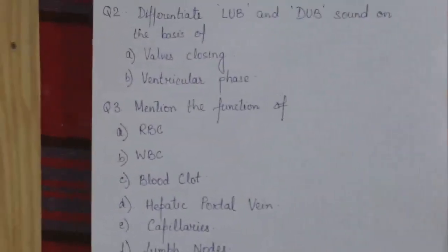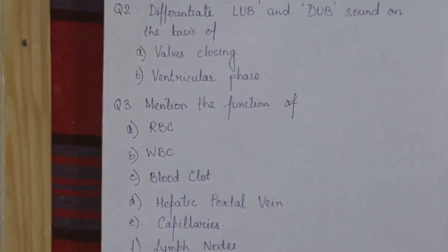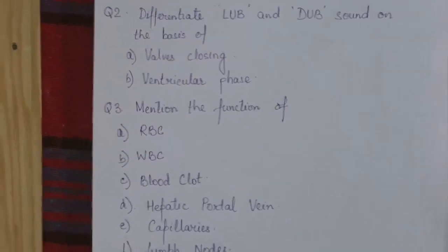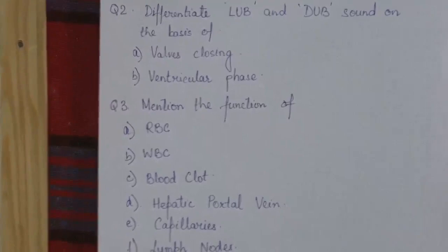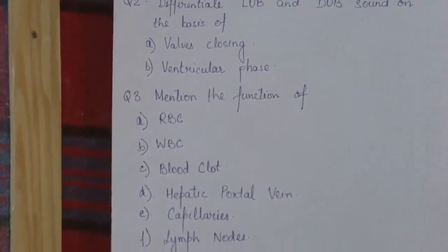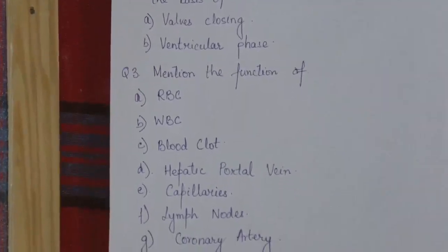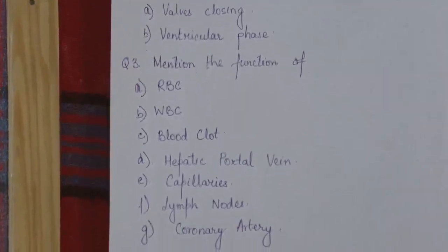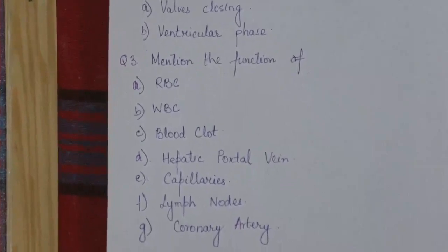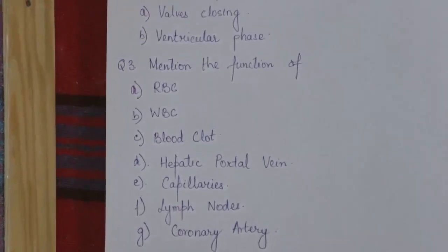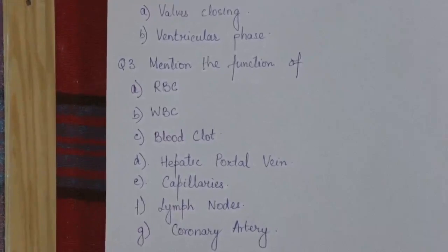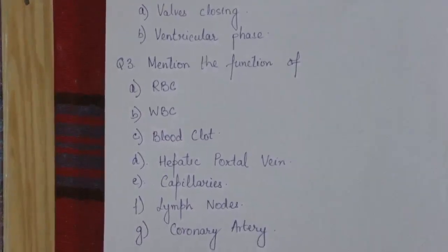Question number three: mention one important function of RBC, the function of WBC, why blood clots are formed, and the function of the hepatic portal vein. As mentioned yesterday, do not write that it regulates the amount of nutrients or detoxifies toxins — write what was already specified.